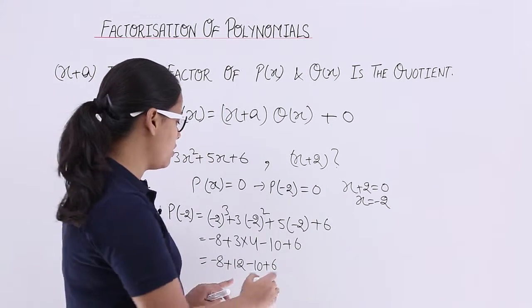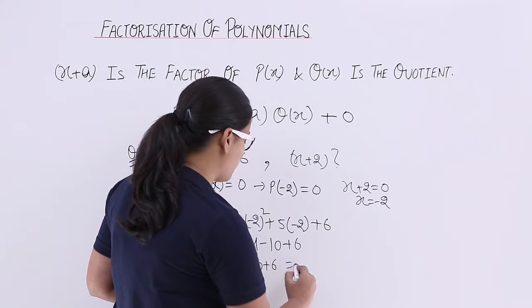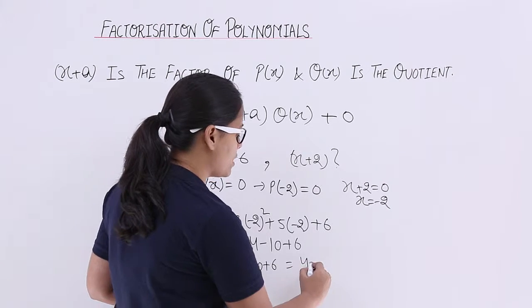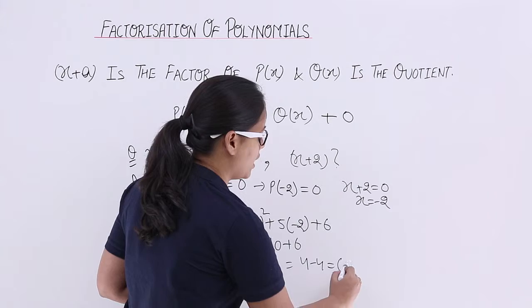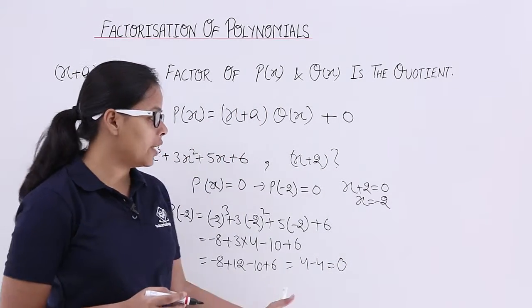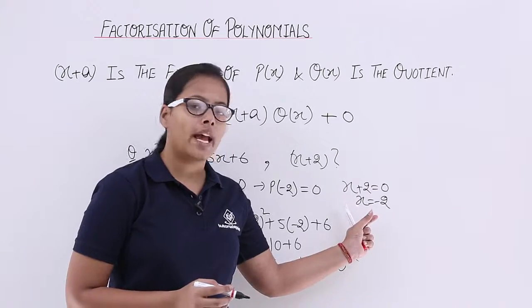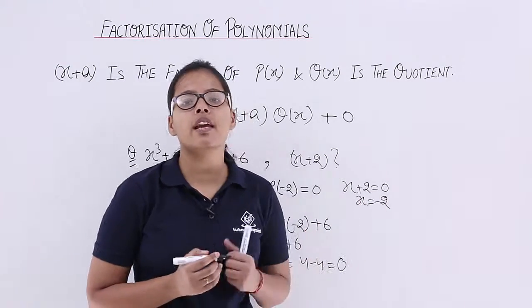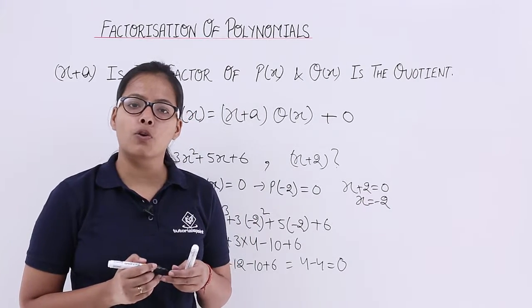-8 + 12 is 4, minus 10 plus 6 is minus 4, and you are getting zero. So what you can see here is you are getting zero for x = -2. That's why x + 2 is the factor of this polynomial.